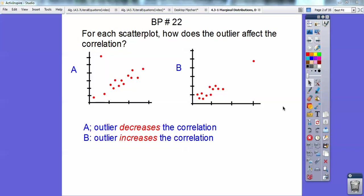Okay guys, here's board problem 22. So it says for each scatterplot, how does the outlier affect the correlation?